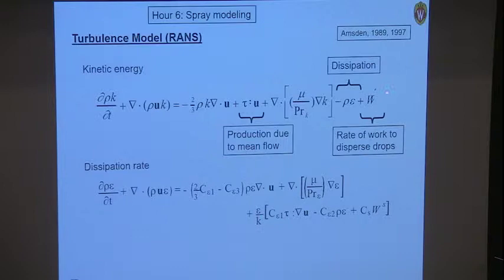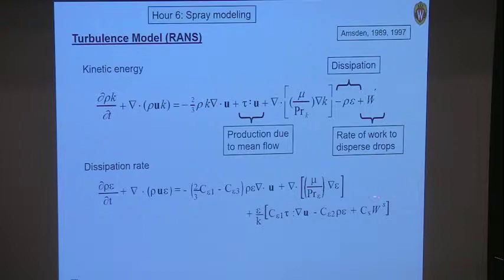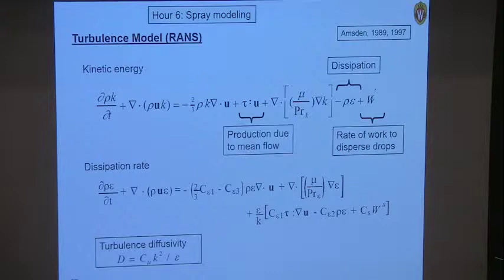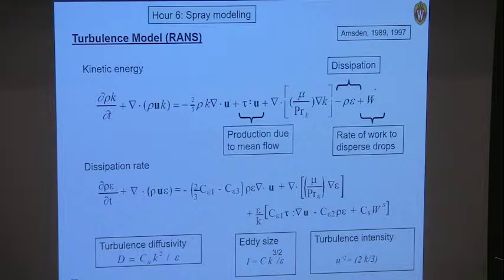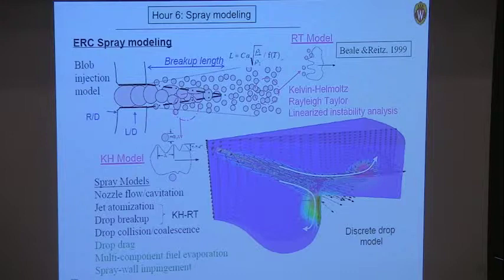The equations are closed with the equation of state and the turbulence model equations. The only new term here is adding to the turbulence kinetic energy from the droplet source term — a work term involving distance per unit time times forces associated with drag. That same term also appears in the dissipation rate equation, so turbulence is affected by spray droplets, which affects turbulent diffusivity, eddy length scale, and turbulence intensity.